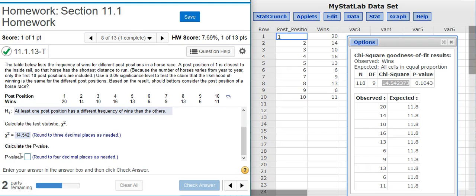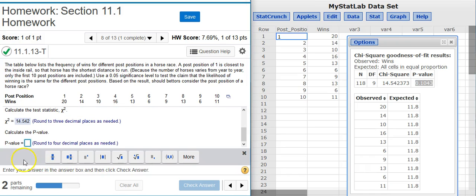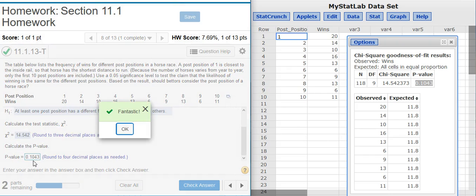The next part asks us to calculate the p-value, which we've already done. It's right next to the test statistic there, that last value there in the results window, round to four decimal places. Conveniently, that's what I'm given here in my answer window. Fantastic!